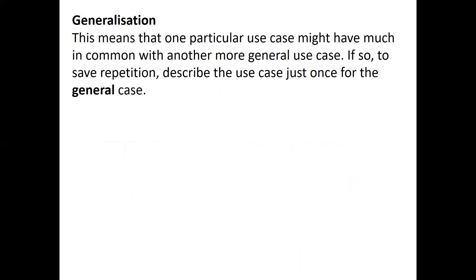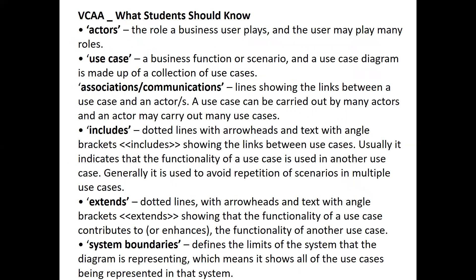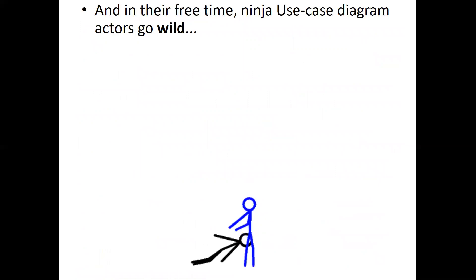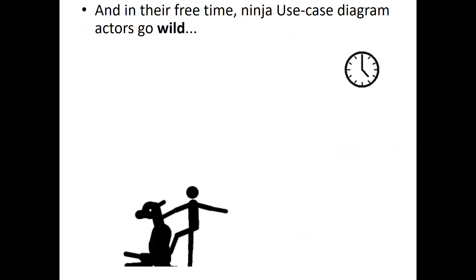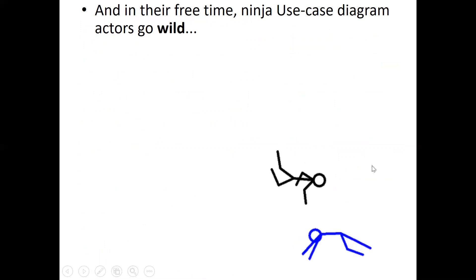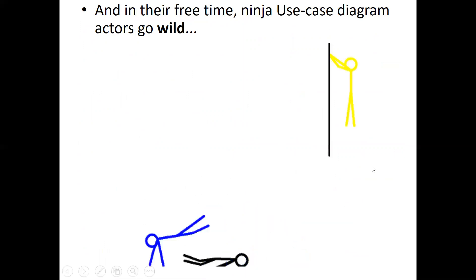Generalization means one particular use case might have much in common with another, more general use case. To save repetition and avoid overcrowding, describe the use case just once for general use. VCAA can and will test us on actors, use cases, associations, includes, extend, and system boundaries — you can check that in the new study design. Have a look at the ninja use case diagram in your free time. Thank you for listening — please communicate with me if you have any questions.